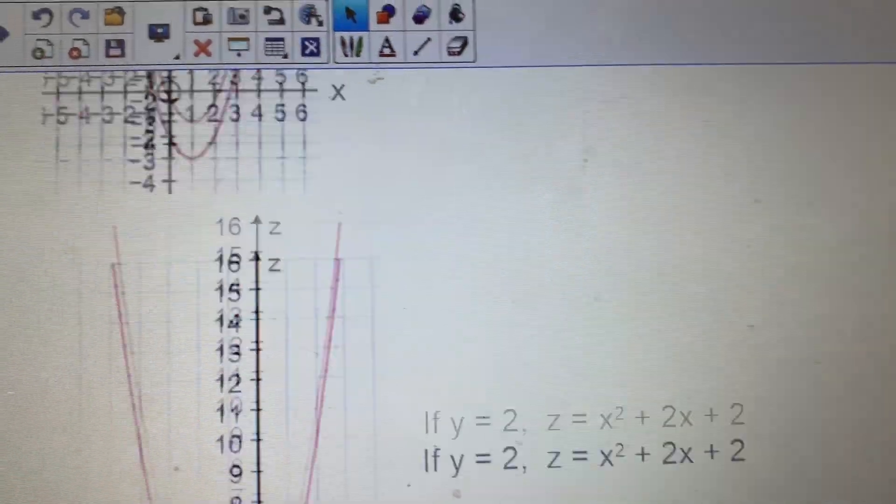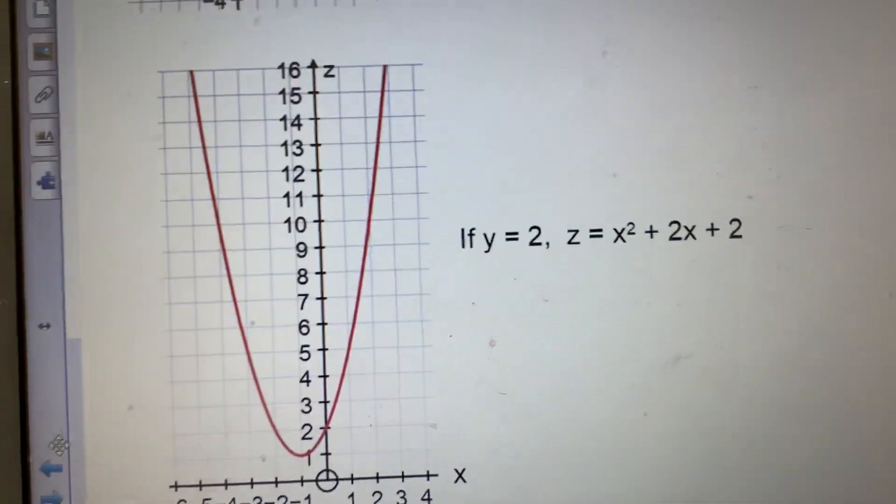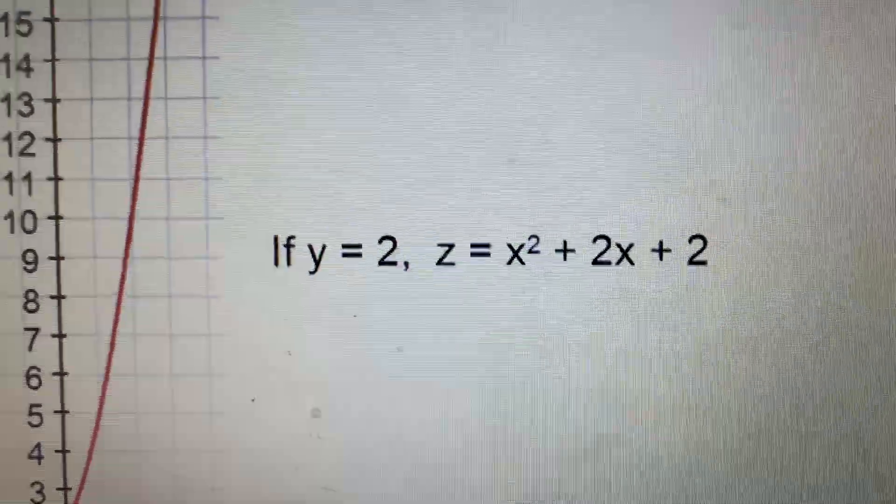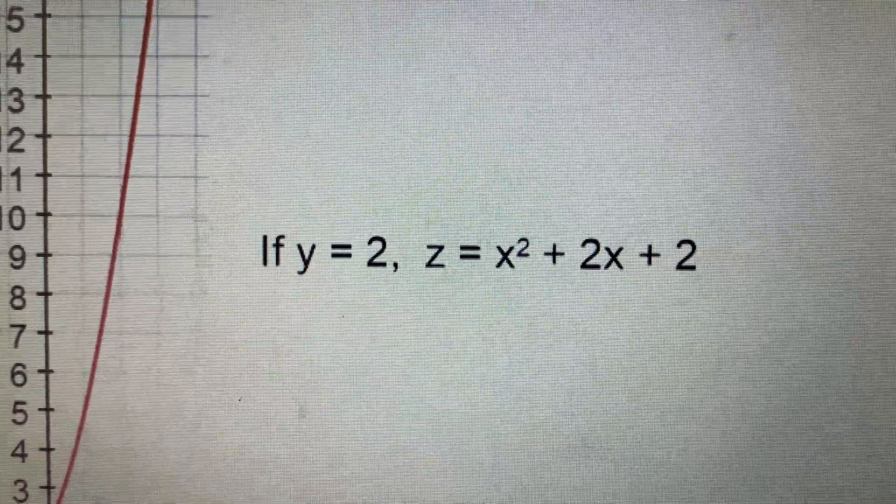And then lastly, it asks you to let Y equal 2. So if you then go back to your original graph equation, replace your Y with 2, that's the equation that you get.